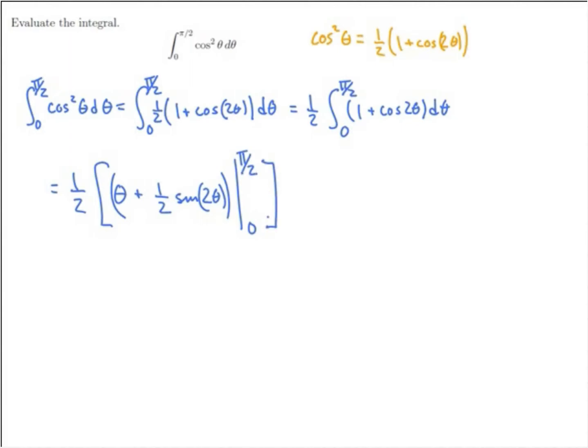Now if you want to check this last antiderivative I did, derivative of sine is cosine. Derivative of the inside function is 2. They will cancel. I'll be left with just cosine of 2 theta. So now let's plug in our endpoints.